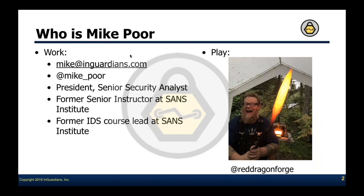So who is Mike Poor? For work, I'm the president and senior security analyst for InGuardians — one of the founders. I have the opportunity to work with some of the smartest people in the industry. You can reach me via email at mikepoor@inguardians.com or on Twitter at Mike underscore poor, though I don't often post enormous amounts of things on Twitter.